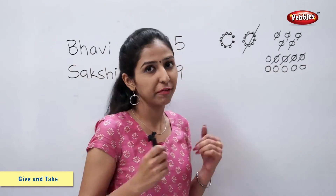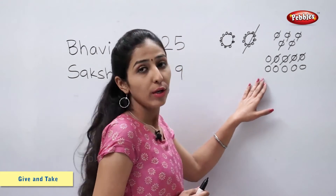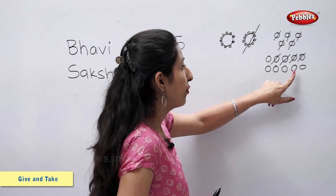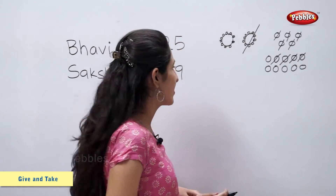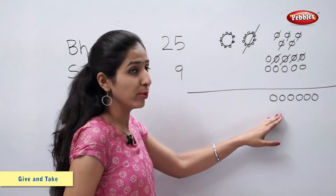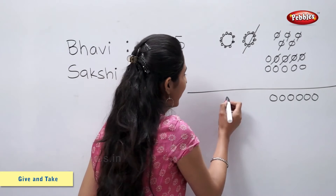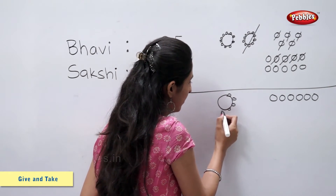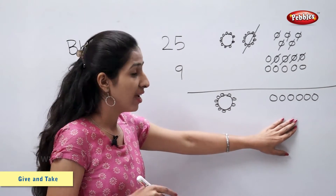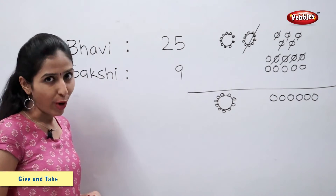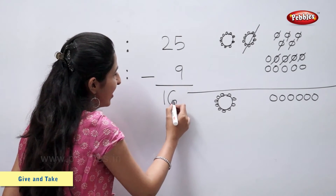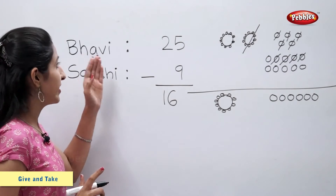Now let's count the number of pearls left with Bavi. Let's count loose pearls first: 1, 2, 3, 4, 5 and 6. There are 6 loose pearls. And 1 bangle of 10 pearls. So 10 plus 6 is equal to 16. So now Bavi is left with 16 pearls.